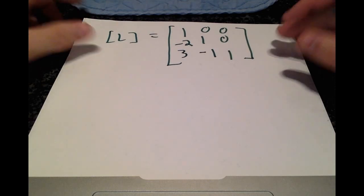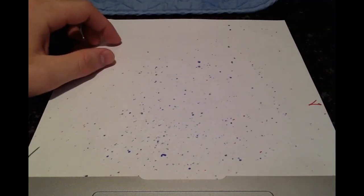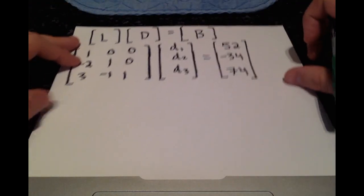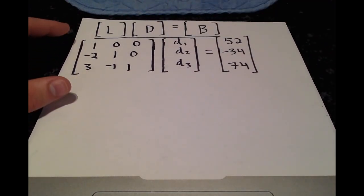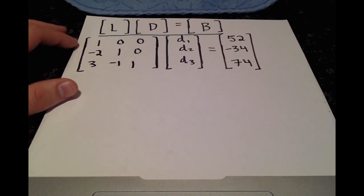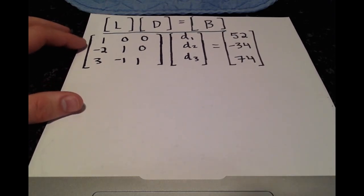Alright, so now we can begin to solve for the d vector with the relationship Ld equals B, which I wrote for us here and filled in the appropriate values. So we're going to want to multiply this out.